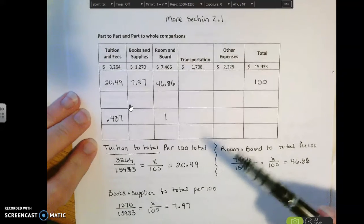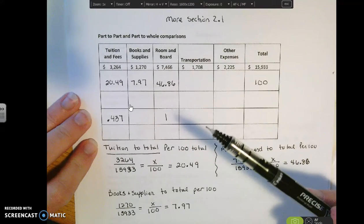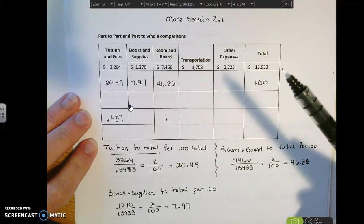So we have this table of information. We're talking about tuition and fees for college, books and supplies, room and board, transportation, other expenses, and then the total of all those.